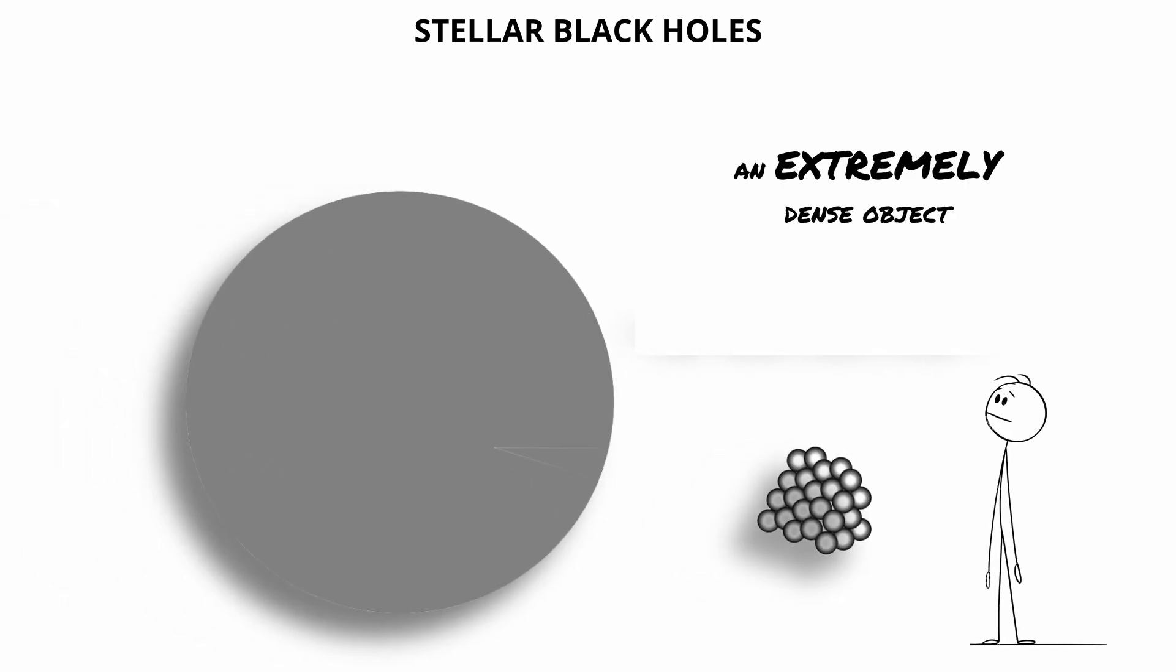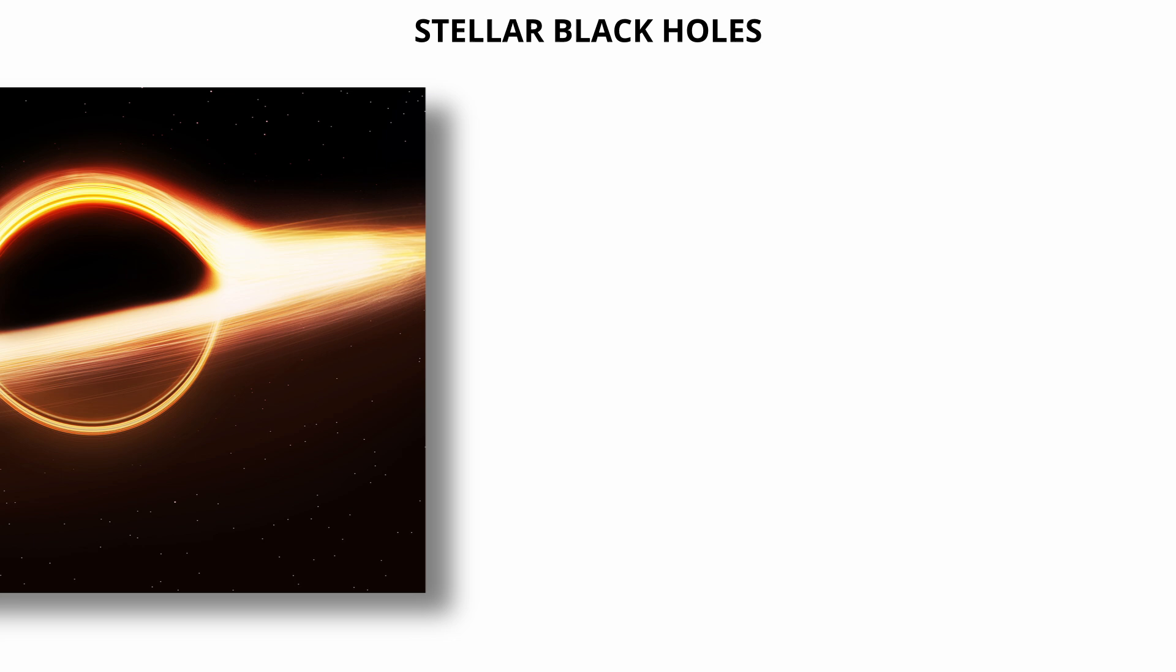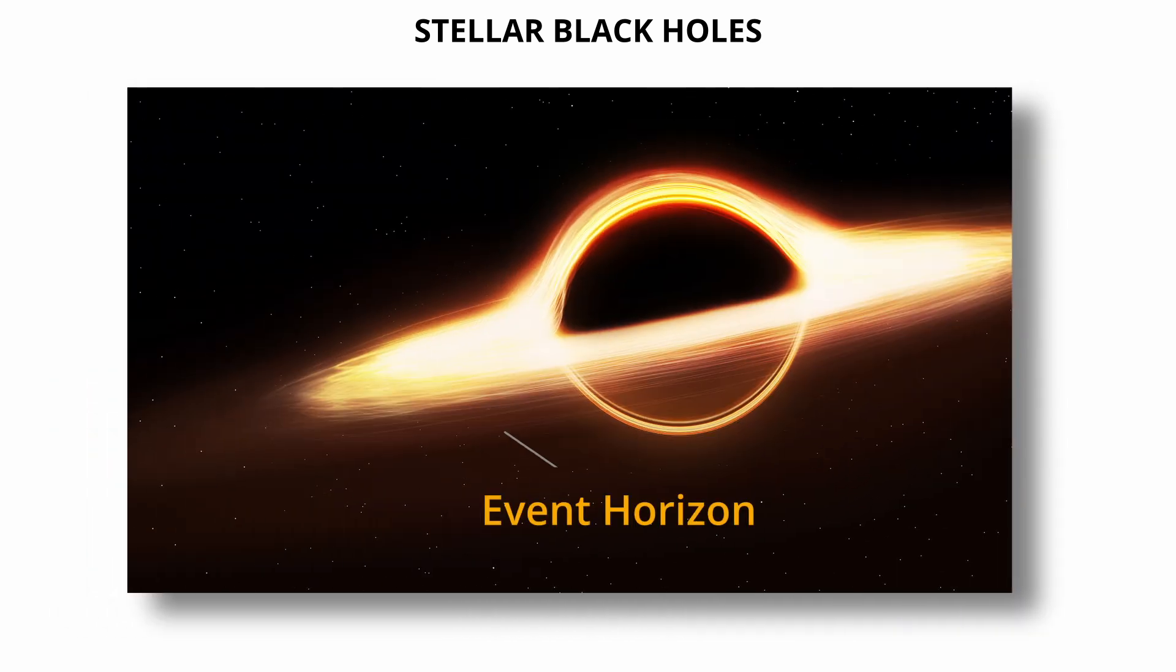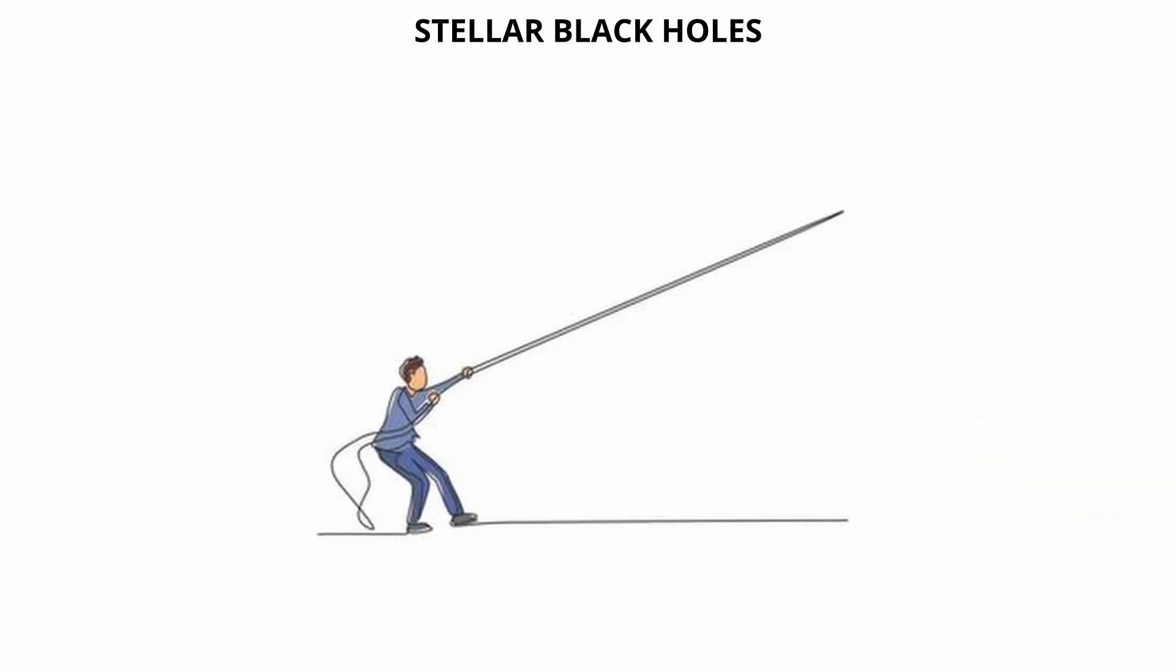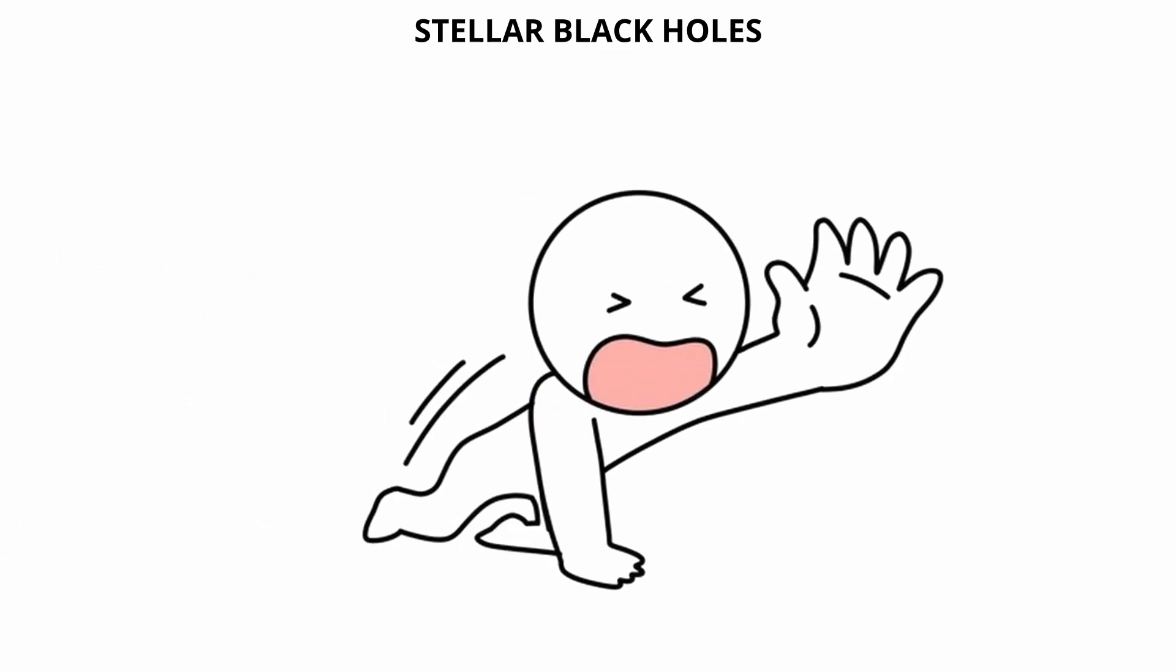The result is an extremely dense object with a gravitational pull so strong that not even light can escape. This boundary around the black hole is called the event horizon. Anything that crosses this invisible boundary is irretrievably pulled inward.